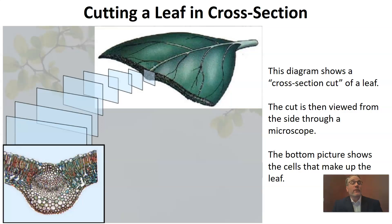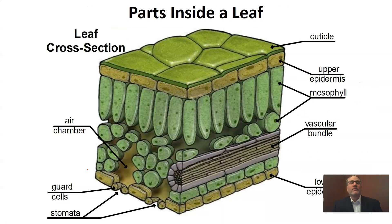As a reminder from what you learned in fifth grade, cells are just the basic building blocks of life. Cells can carry out all of those seven life processes, and they are alive — we can say they're the smallest unit of life. So let's take a look and see what we find inside of a leaf.